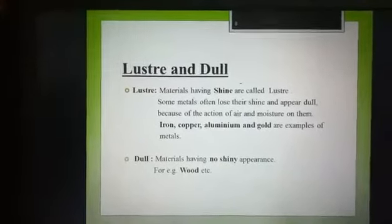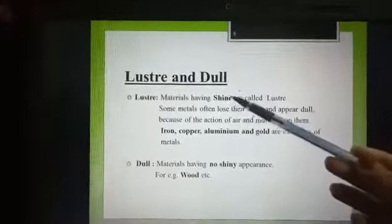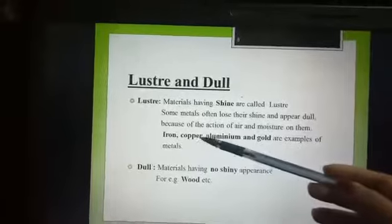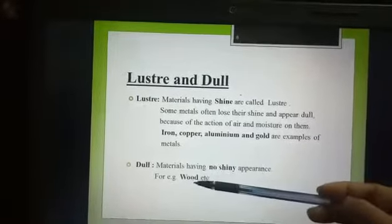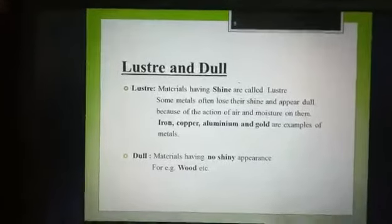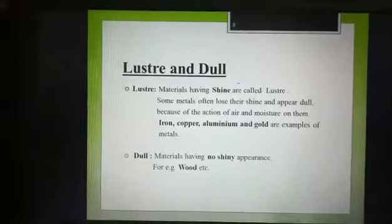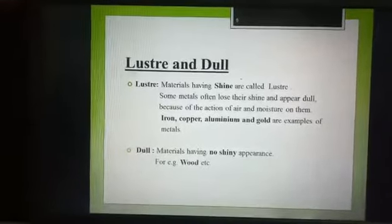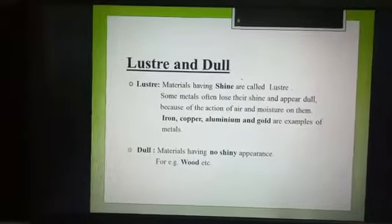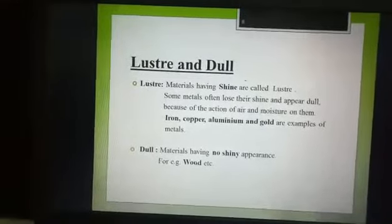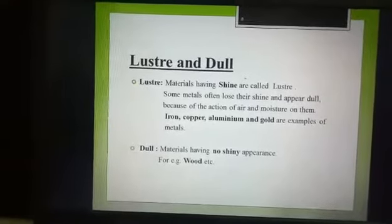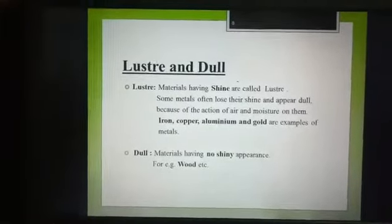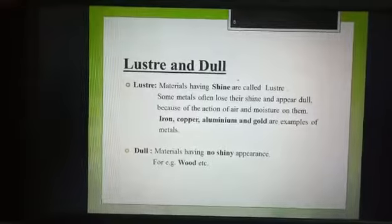Topic number two is luster and dull. Luster means if the material is shining; dull means if there is no shining. Examples of luster are iron, copper, aluminium, and gold. Dull examples are wood and pen — there is no shining. Suppose if there is a metal and it is dull, cut that metal surface. Then on the newly cut surface, you will observe a shiny appearance. So this is known as luster — even if the upper surface appears dull, if you cut it, it appears shiny.